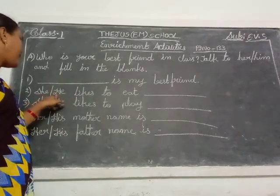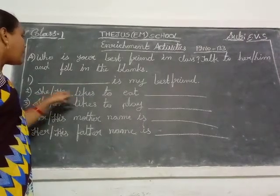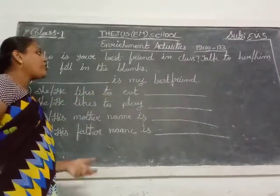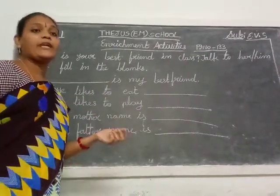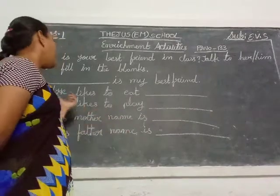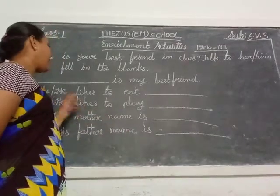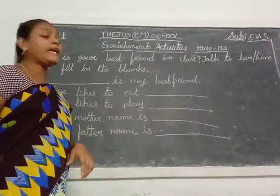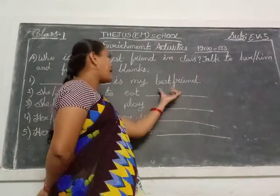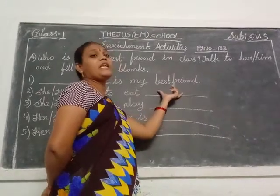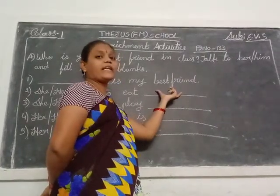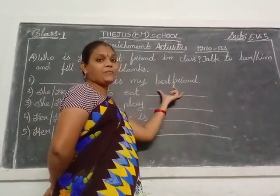Next — she or he likes to eat. So, your best friend likes to eat — which item? That food name you write here. Your best friend's liking food, write that name in this blank.